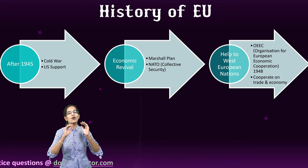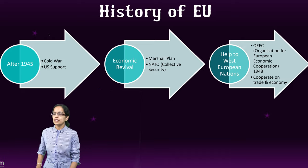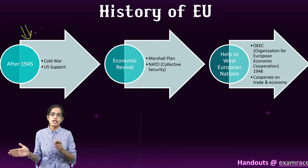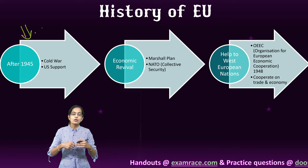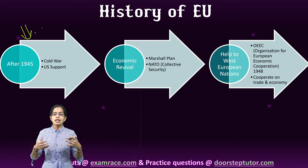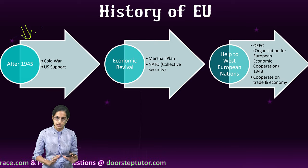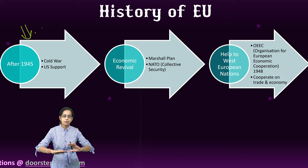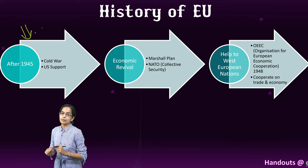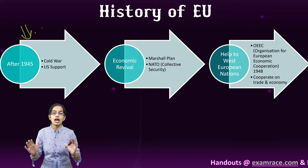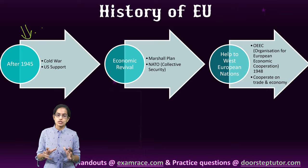European Union — how the formation of the European Union started is pretty interesting. After 1945, which was the end of the Second World War, we had seen that the Cold War started. The support from the US started and there was an economic revival in the European nations. This was laid down under the Marshall Plan, but the idea was to bring in a sense of security among the nations. As a result, NATO was established, and this NATO aimed at providing collective security.